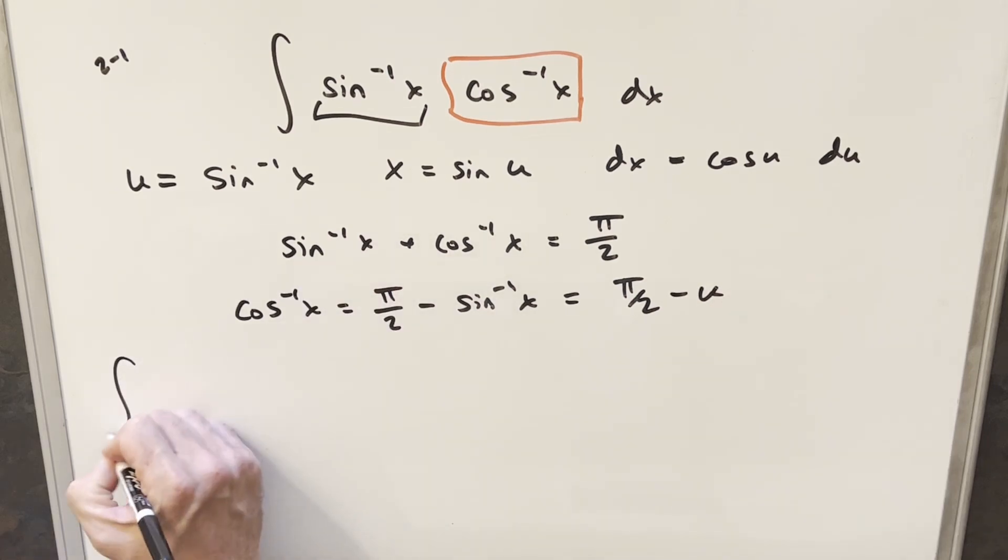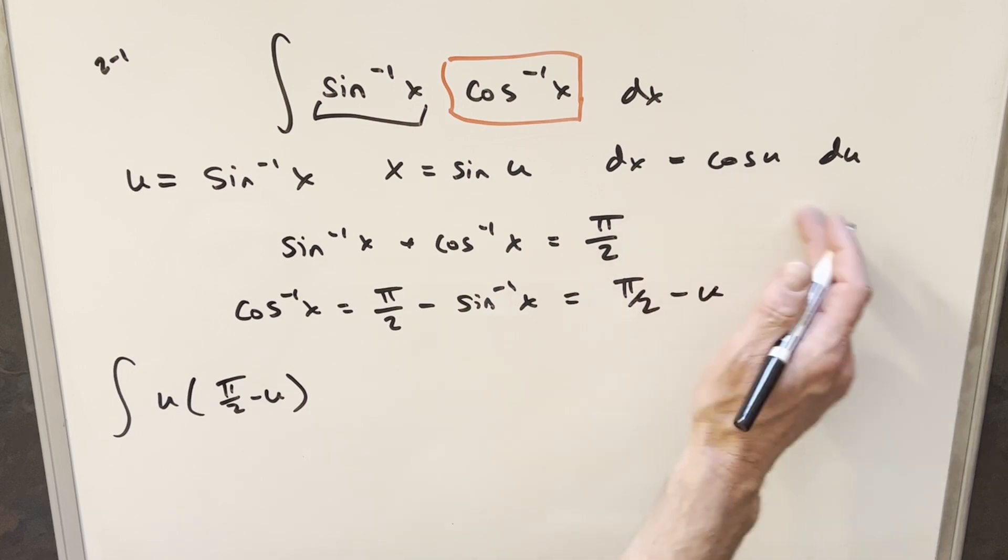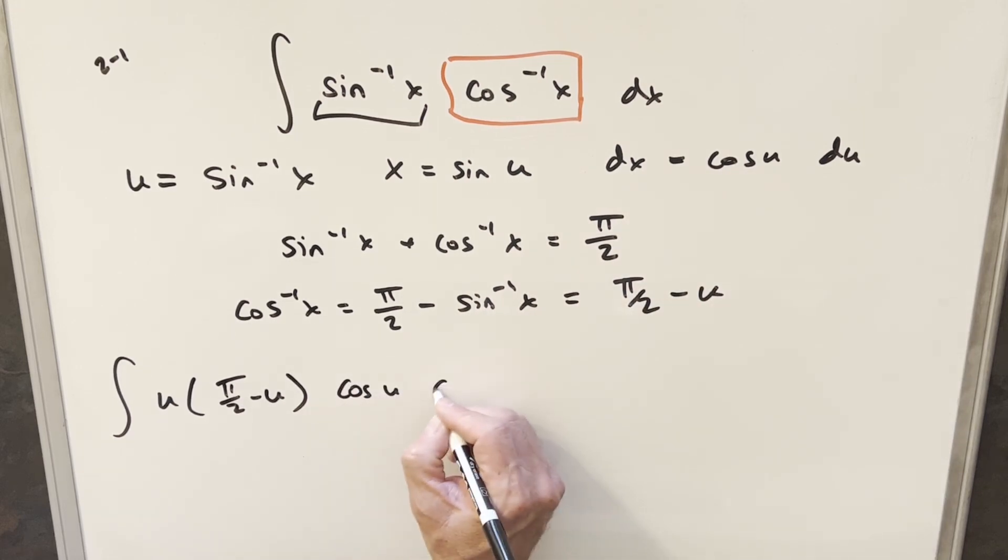So now I'll go ahead and make this substitution. Our arcsine is just going to be u. We have this value for arccosine of π over 2 minus u. And then our dx is going to be cosine of u du.